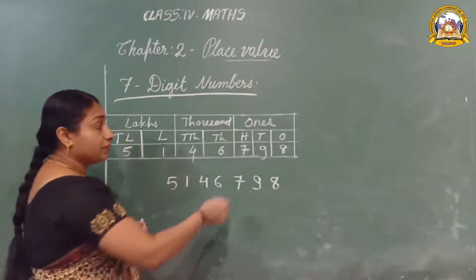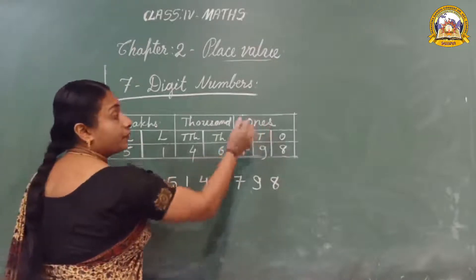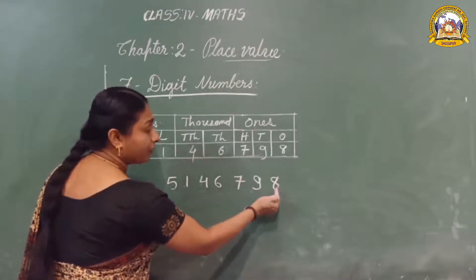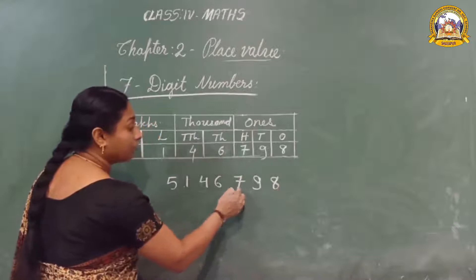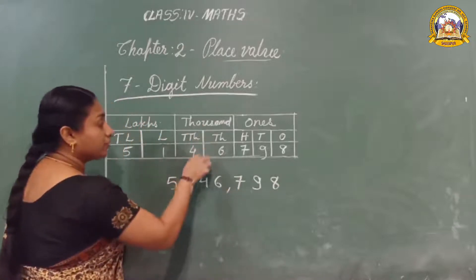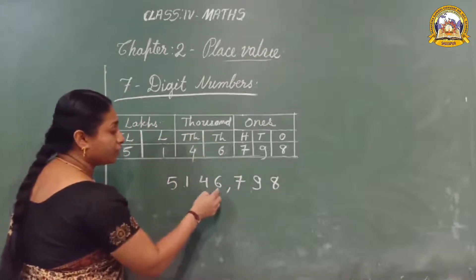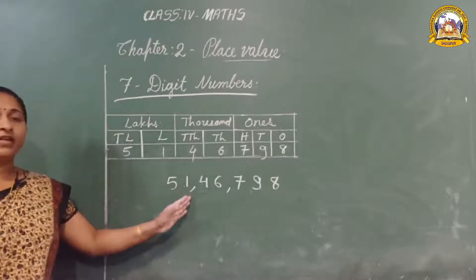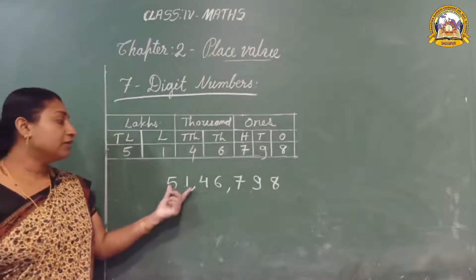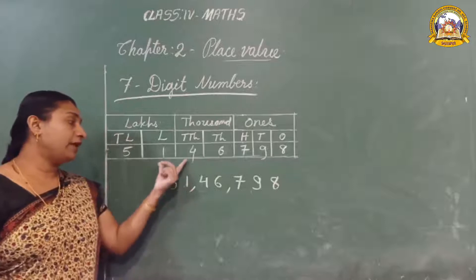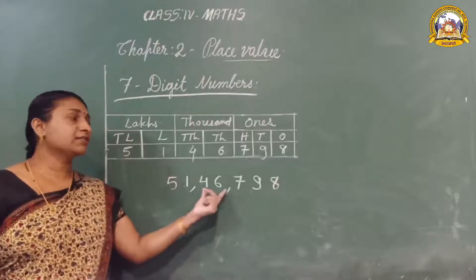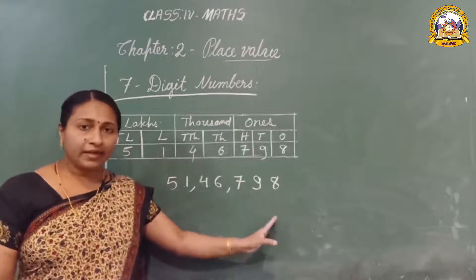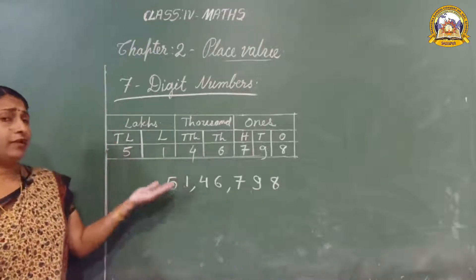Let us give the comma to separate the periods. First, count from the right: one, two, three — then put a comma. In the thousands period there are two digits, so count one, two — then put one more comma. How can we read it? Fifty-one lakh, forty-six thousand, seven hundred and ninety-eight.